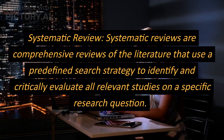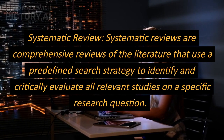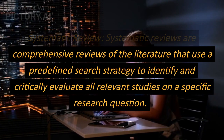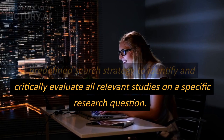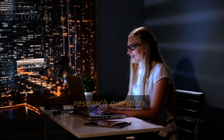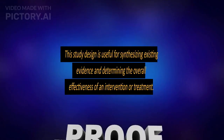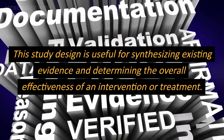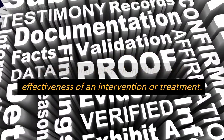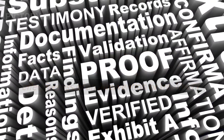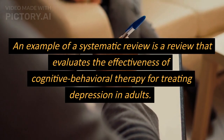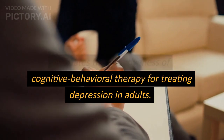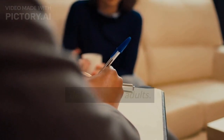Systematic review. Systematic reviews are comprehensive reviews of the literature that use a predefined search strategy to identify and critically evaluate all relevant studies on a specific research question. This study design is useful for synthesizing existing evidence and determining the overall effectiveness of an intervention or treatment. An example of a systematic review is a review that evaluates the effectiveness of cognitive behavioral therapy for treating depression in adults.